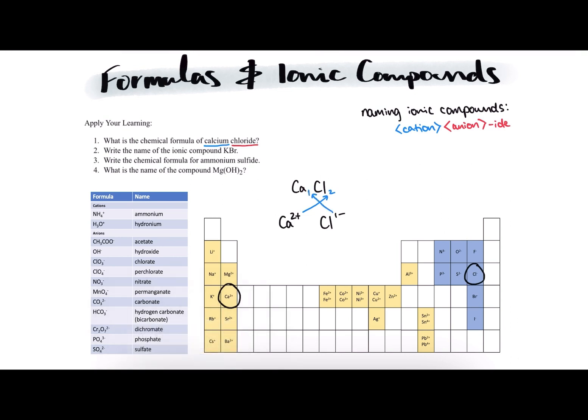Once we've done that, if need be, we can simplify them, but in this case we cannot further simplify them. So calcium chloride will be formed in a 1 to 2 ratio of 1 calcium for every 2 chlorine ions, and so the chemical formula of calcium chloride is CaCl2. That's the answer to number 1.